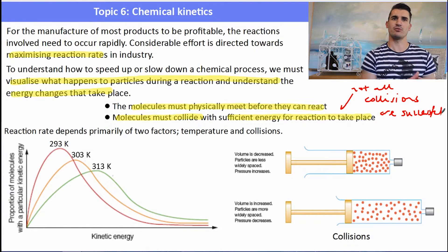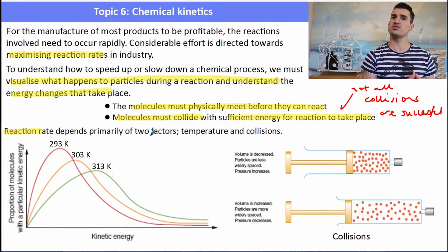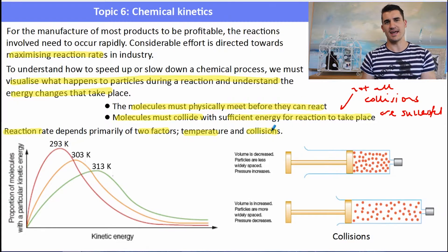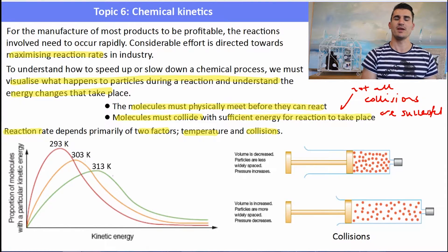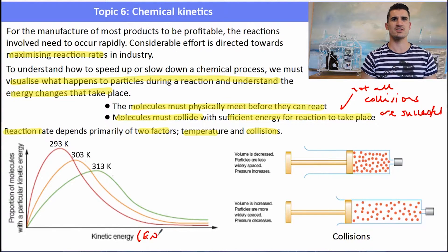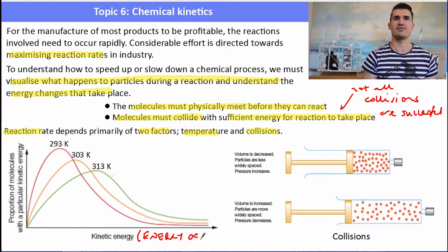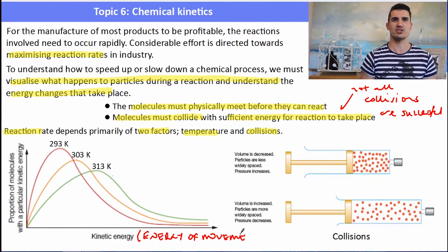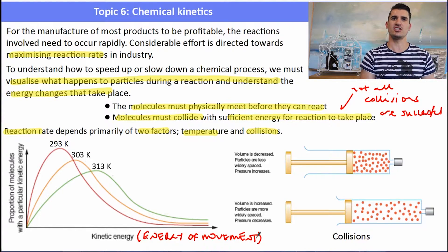We have a diagram called a Maxwell-Boltzmann distribution, which shows the average kinetic energy of the particles relative to the Kelvin temperature. Kinetic energy is the energy of movement. If we look at the red curve at 293 Kelvin, it has a hump toward the left of the curve, and the top of that hump represents the average kinetic energy — so the average kinetic energy of a sample of molecules at 293 Kelvin is at about that location.